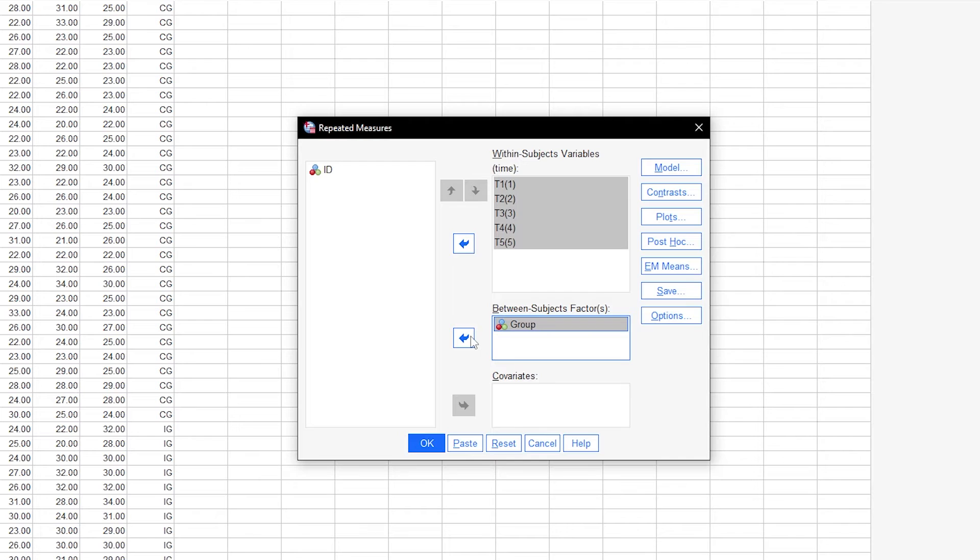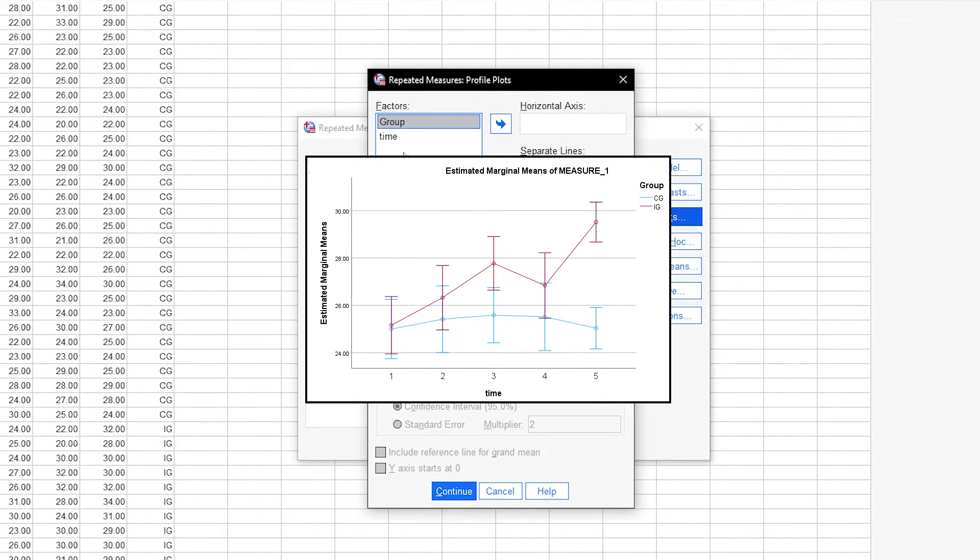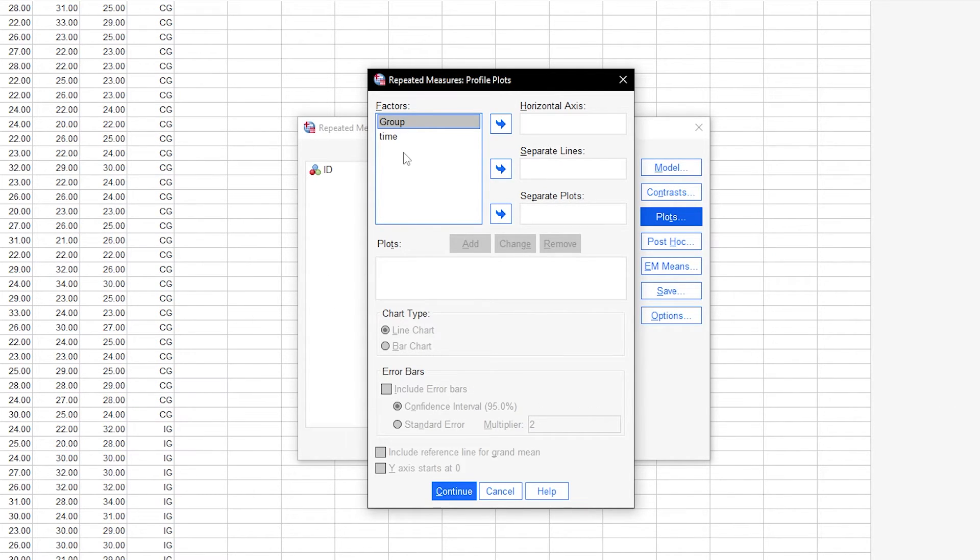We also request a line plot or bar plot via the plots button. This diagram shows the mean values and, if requested, also the error bars. It is advised to place the within-subjects factor, in this case time, on the horizontal axis. The between-subjects factor is placed in the separate lines box. Click add and then select the chart type as well as if you want error bars or not.